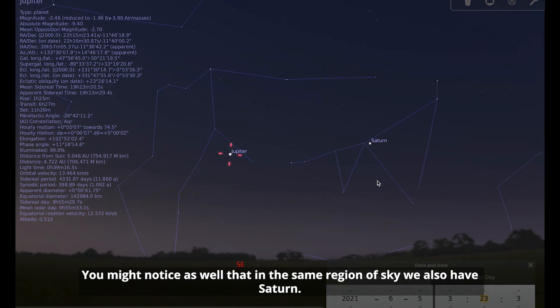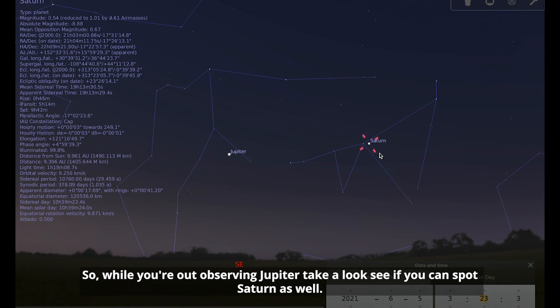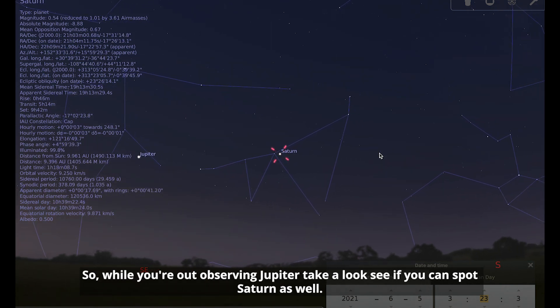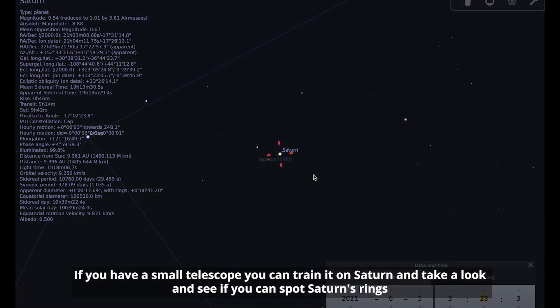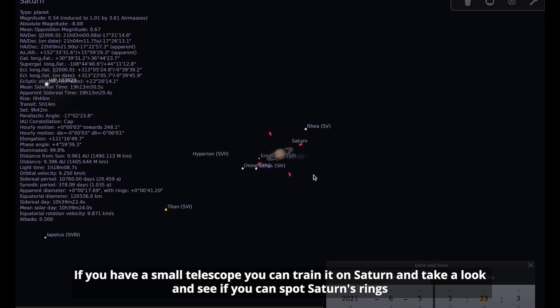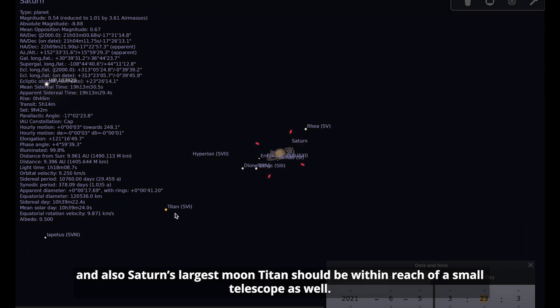You might notice as well that in the same region of sky, we also have Saturn. So while you're out observing Jupiter, take a look, see if you can spot Saturn as well. If you have a small telescope, you can train that on Saturn and take a look and see if you can spot Saturn's rings. And also Saturn's large moon Titan should be within reach of a small telescope as well.